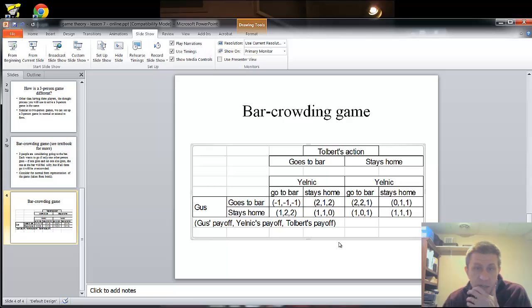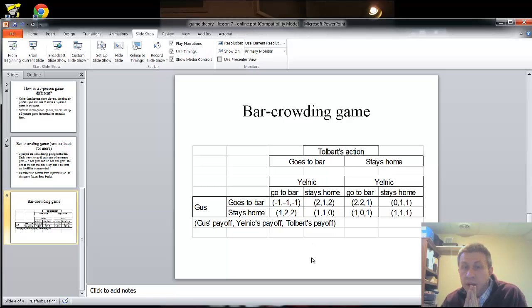So the actions here, each player could choose to go to the bar or stay home. All three players have the same one. This is really a symmetric game. For class, I want you to find the Nash equilibrium or the multiple Nash equilibria of the game. Do your best and bring that into class the next time we meet.